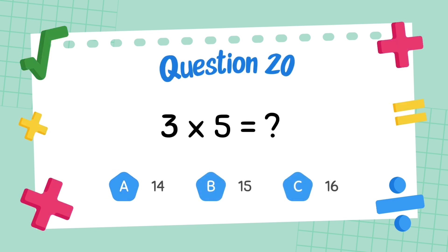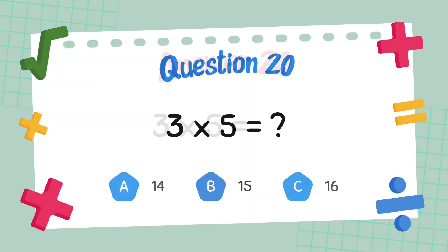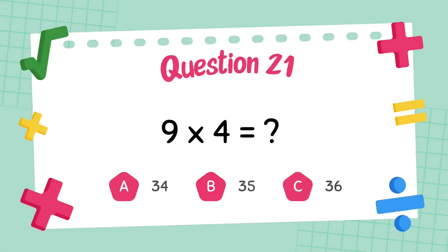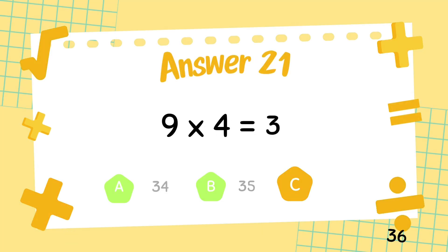What is 3 multiply 5? The answer is 15. What is 9 multiply 4? The answer is 36.